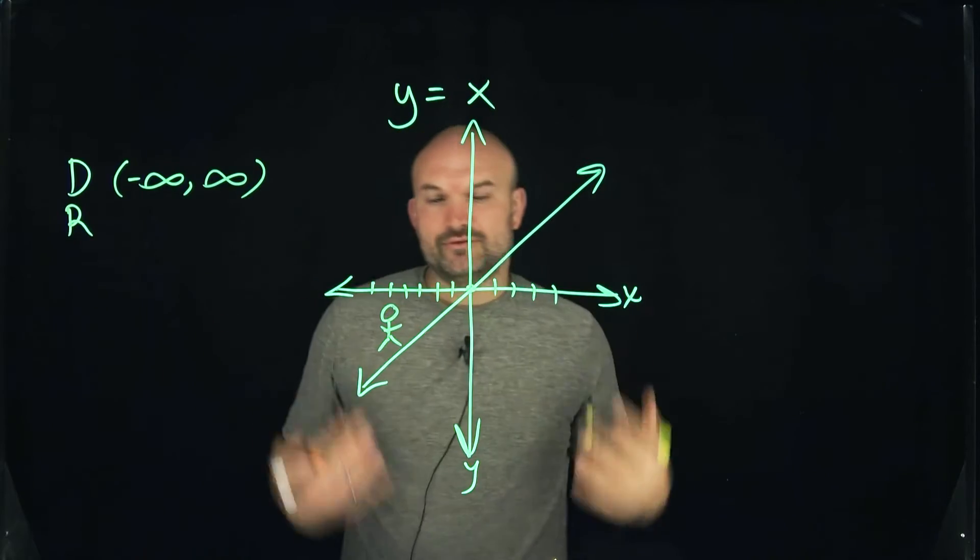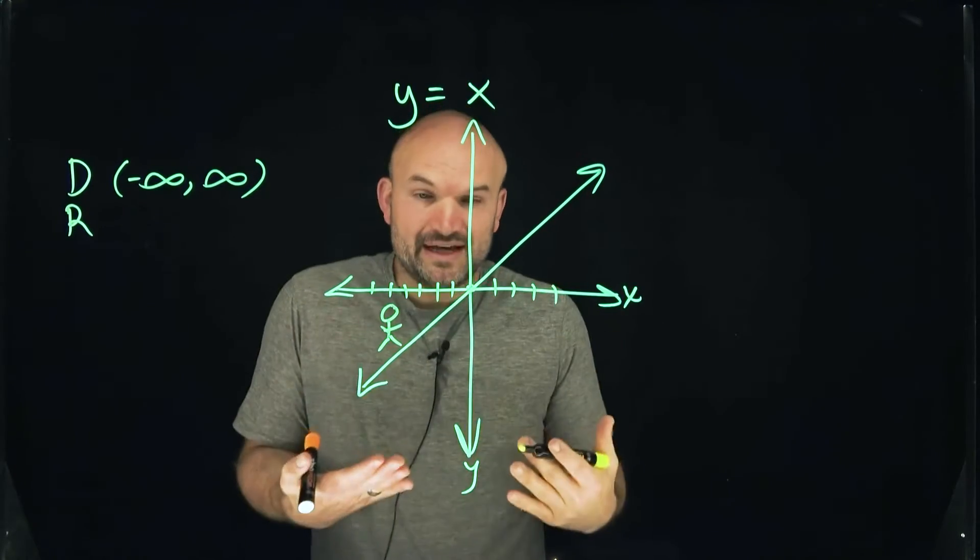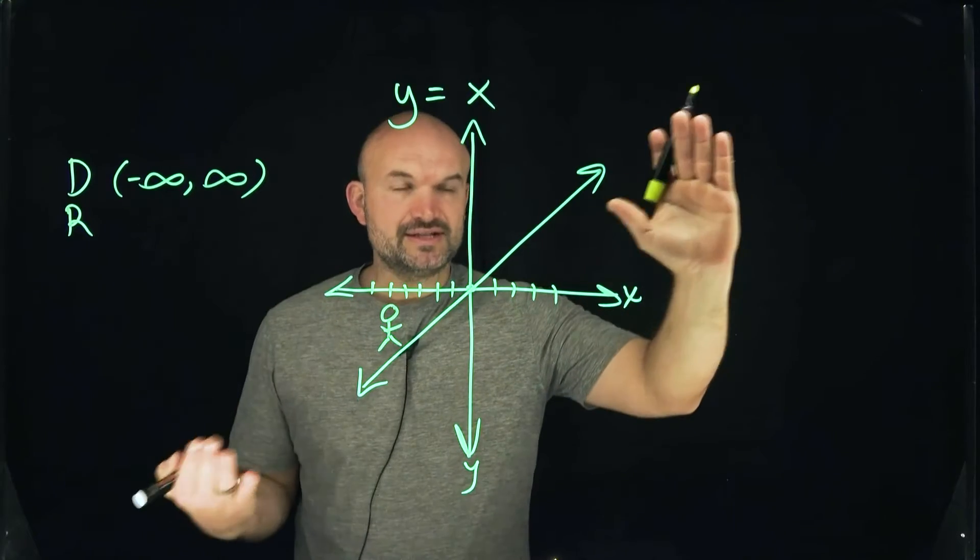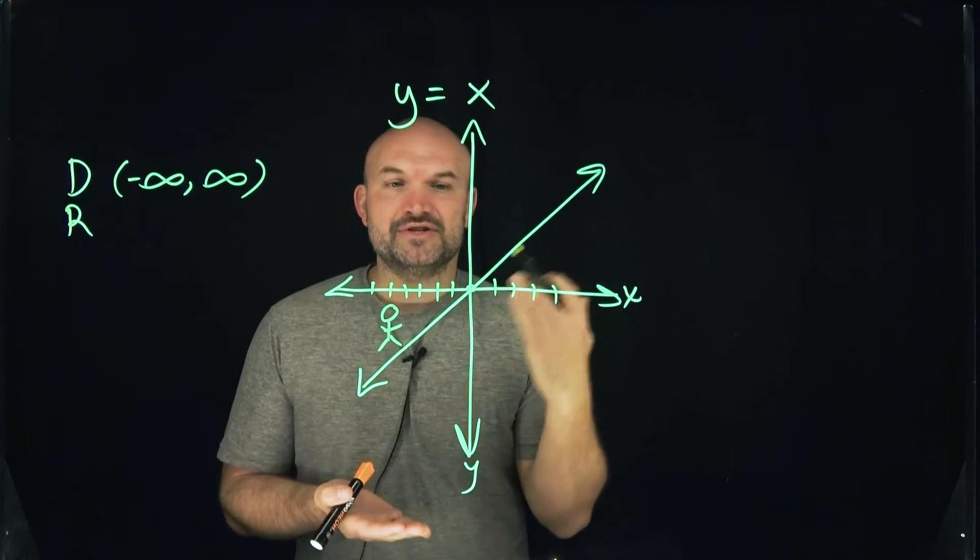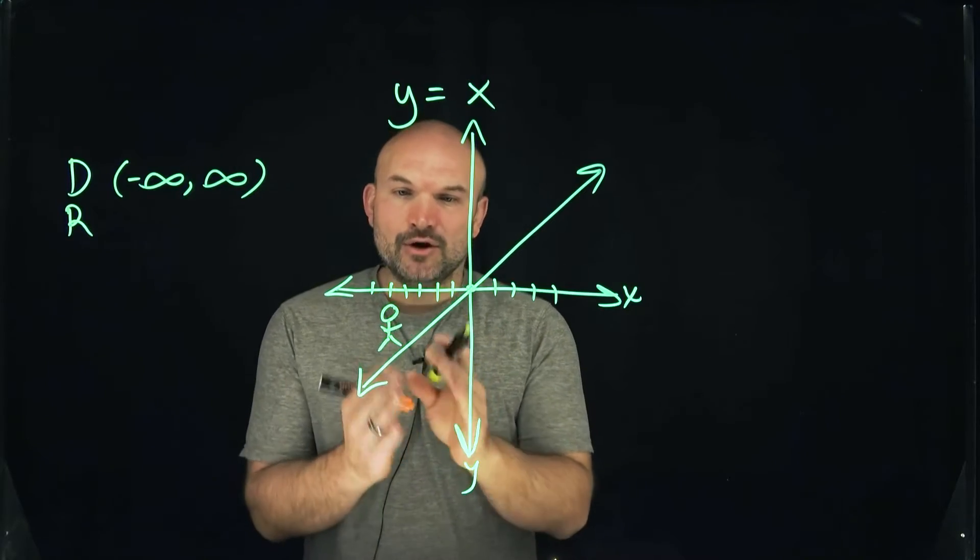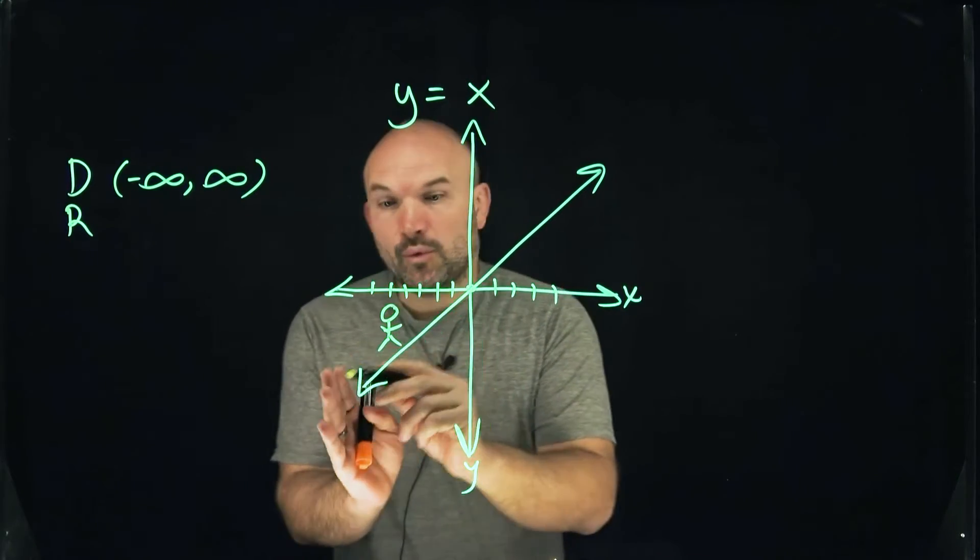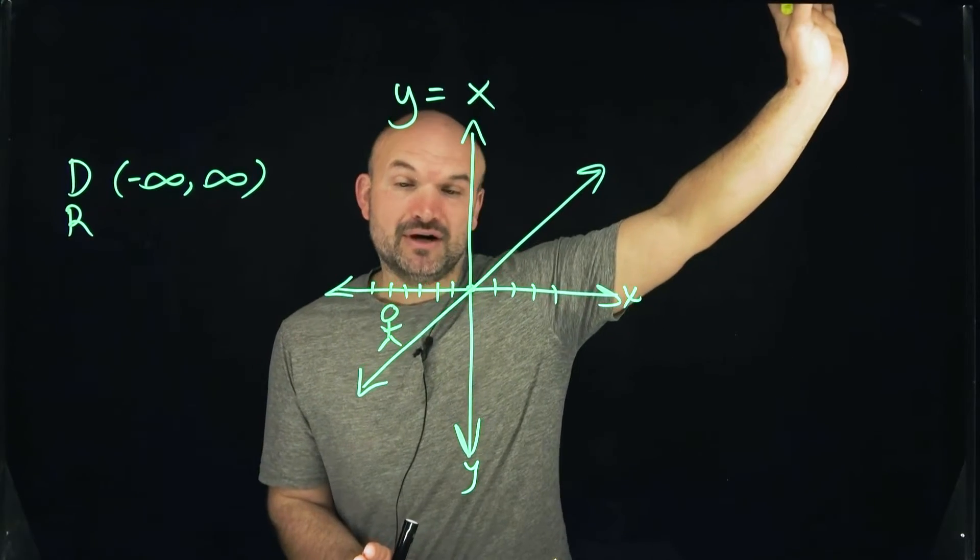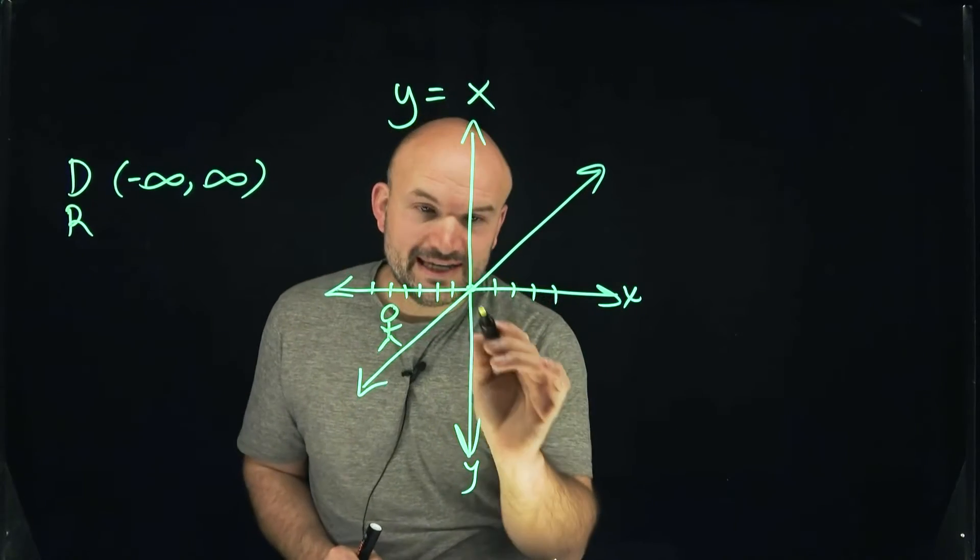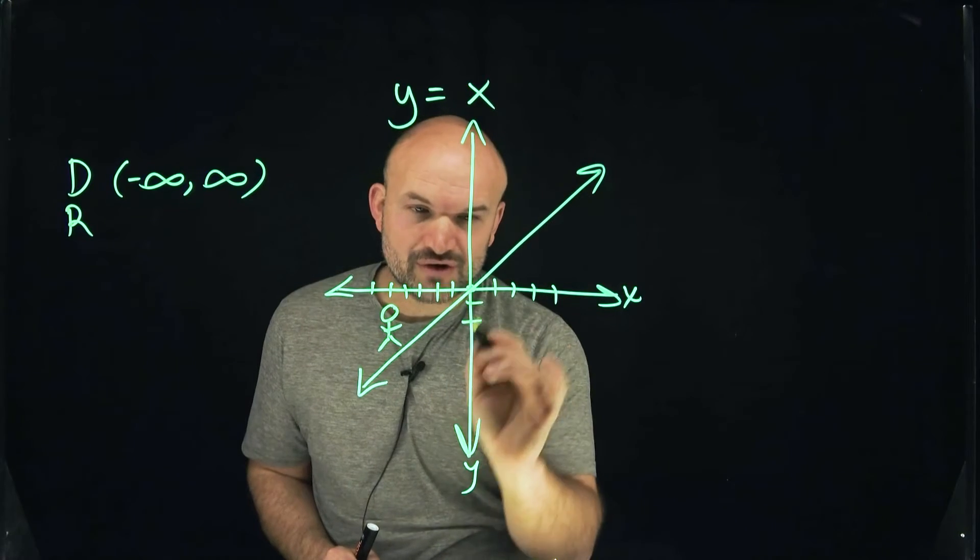When we're looking at the range, we're looking for the set of all y values that you would cover within this whole graph. Again, you can see there's no breaks, no holes, no asymptotes or anything else that would restrict us.